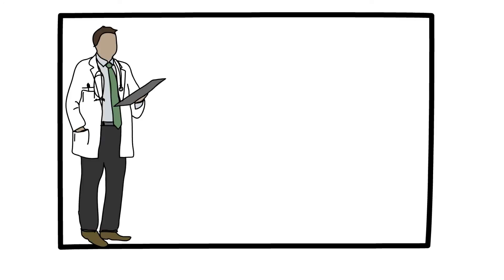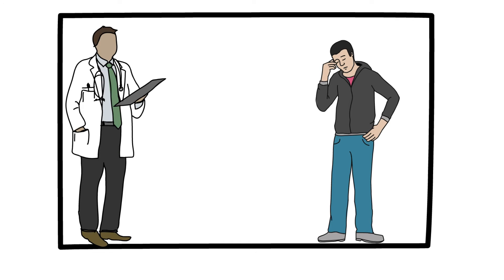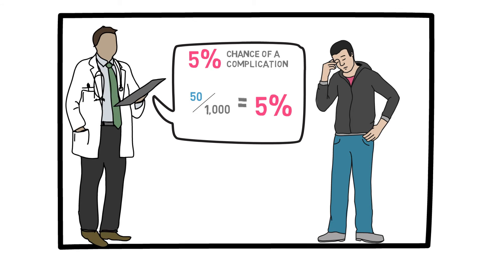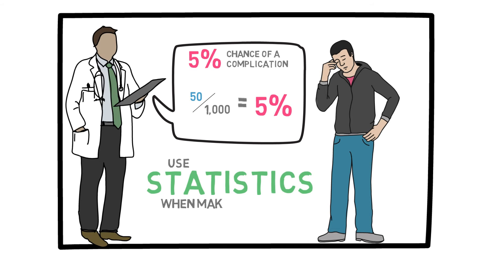For example, say you go to the doctor and she suggests that you have an operation with a 5% chance of some specific complication. How does the doctor come up with this number? Let's say 1000 people have had this operation and 50 of them have experienced this complication. So we say the probability of that complication is equal to 50 out of every 1000, which is 5%. We are living in an age where it is very easy to obtain certain statistics, and we should be able to use those statistics when making decisions in our lives.